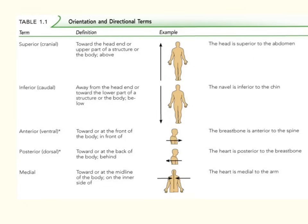Just like on a compass, each directional term will have a counterpart with an opposite meaning. These terms are very useful when describing the location of structures to be studied during dissections. When we deal with directional terms, we have to give the directional term in relation to an object — for example, when giving driving directions, you would not say 'turn right,' you would say 'turn right at the second red light.' So we have to give this in relation to a specific structure.